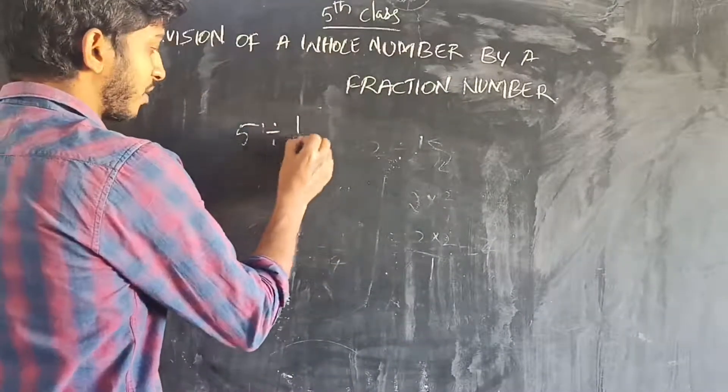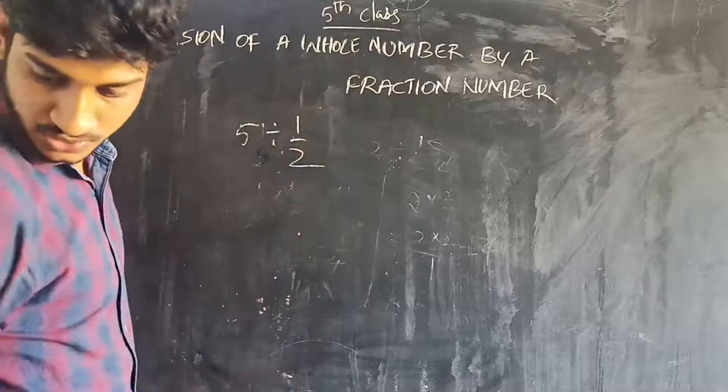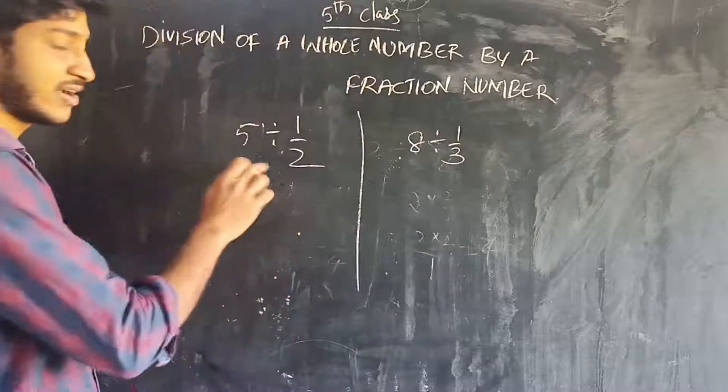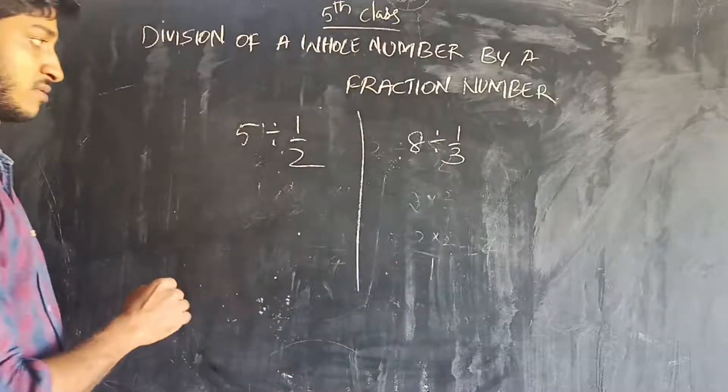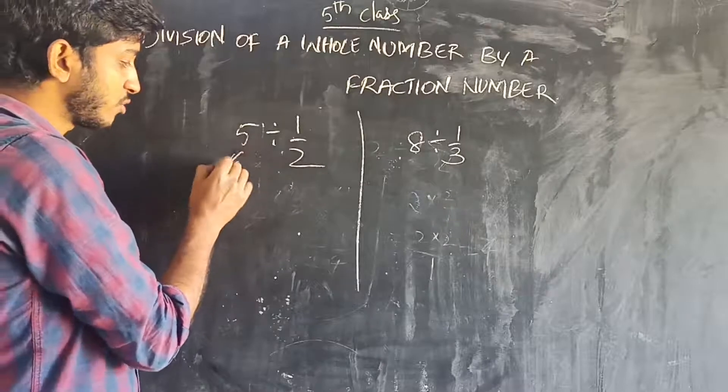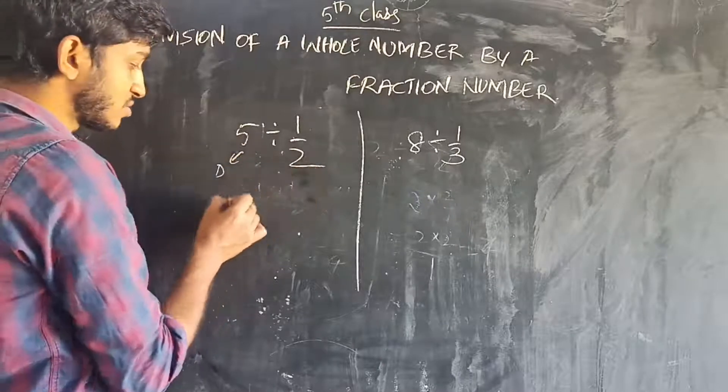5 divided by 1 by 2, and also 8 divided by 1 by 3. These two examples I will show you. 5 divided by 1 by 2. So this dividend looks like 2. So here, we got first divide and answer. Dividend are the same.